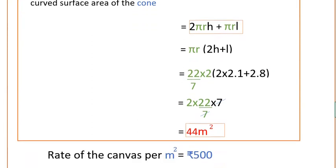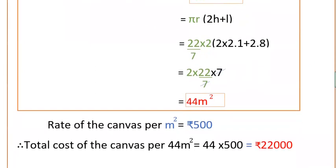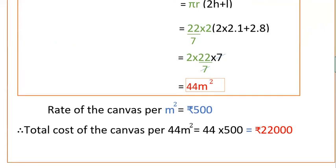And here we have to find the total cost of the canvas. Rate of the canvas per meter square is given, that is 500 rupees. So per 44 meter square, that is 44 times 500, that is 22,000 rupees. This is the total cost of the canvas.